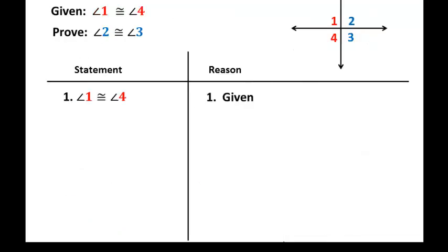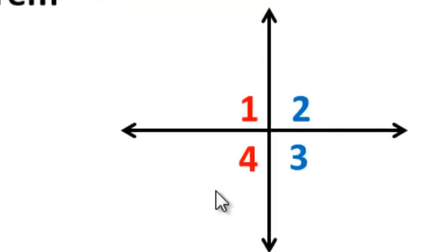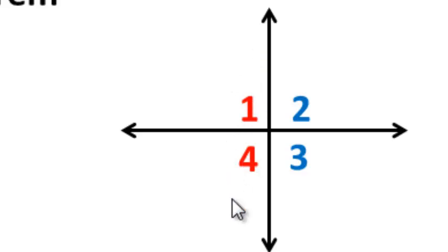Now let's use that to do one more proof. This time we're given that angle one is congruent to angle four. Let's look at our diagram — we're going to prove that these two blue angles, two and three, are congruent to each other. All we know right now is that angle one is congruent to angle four.